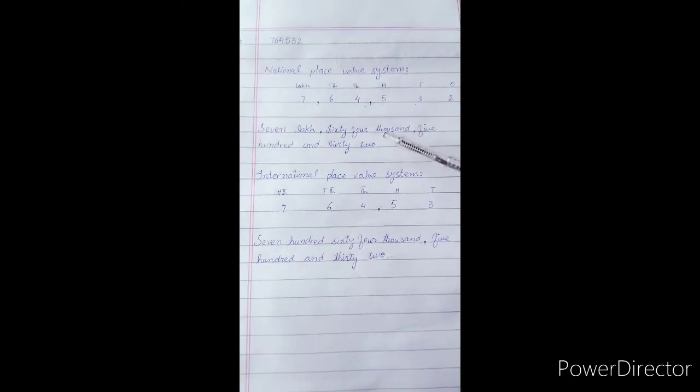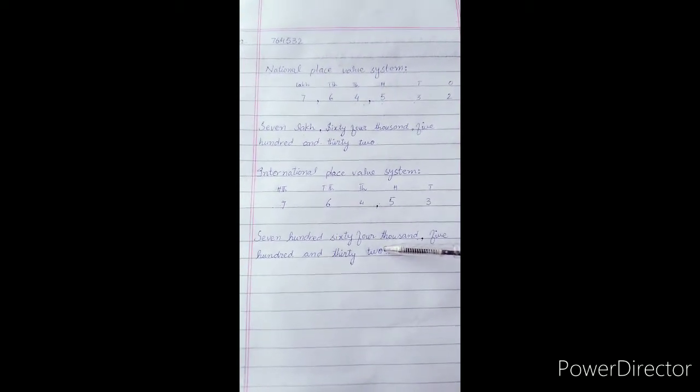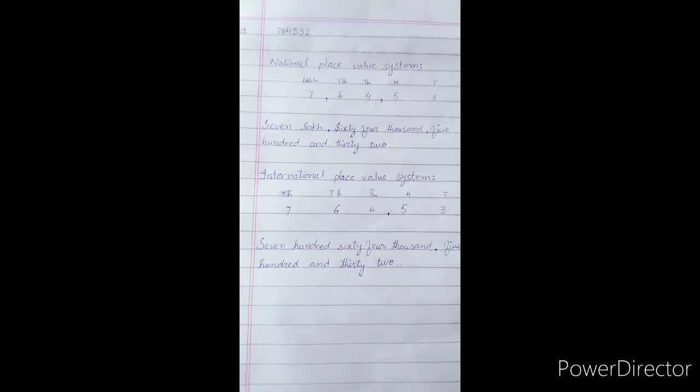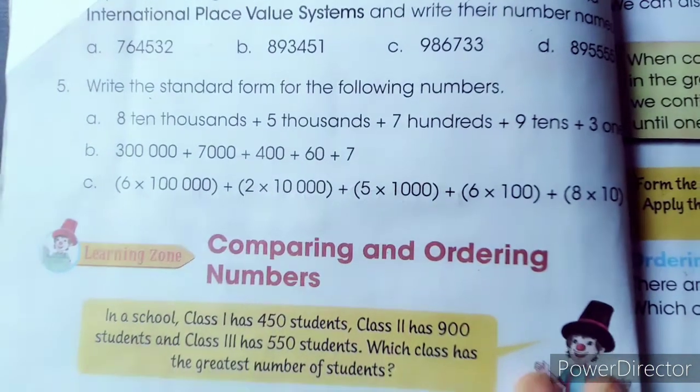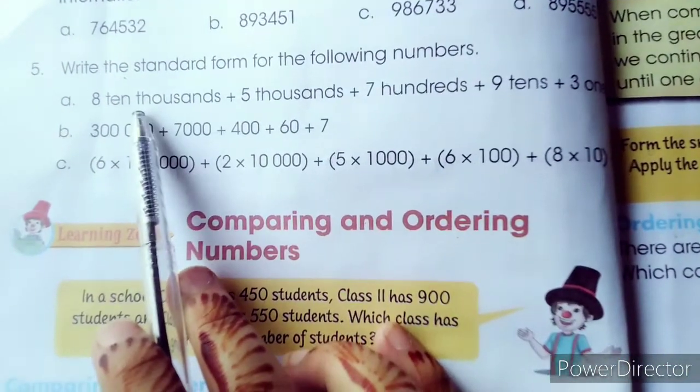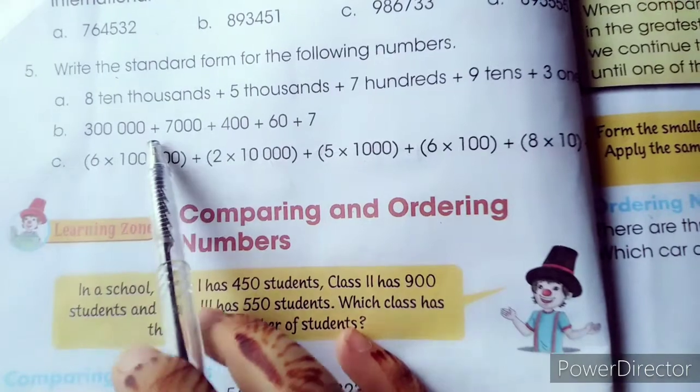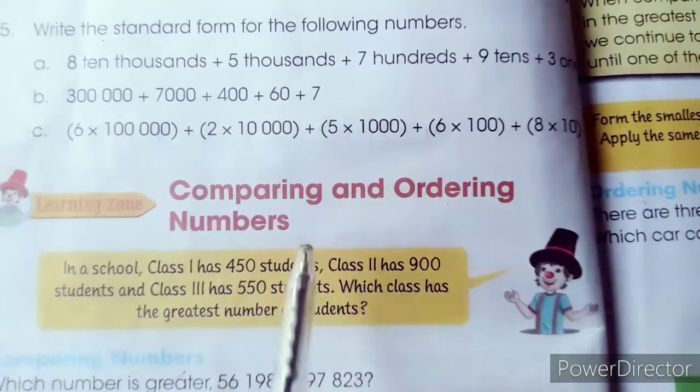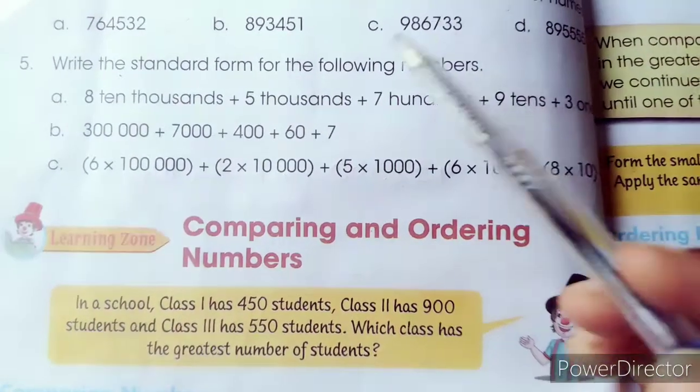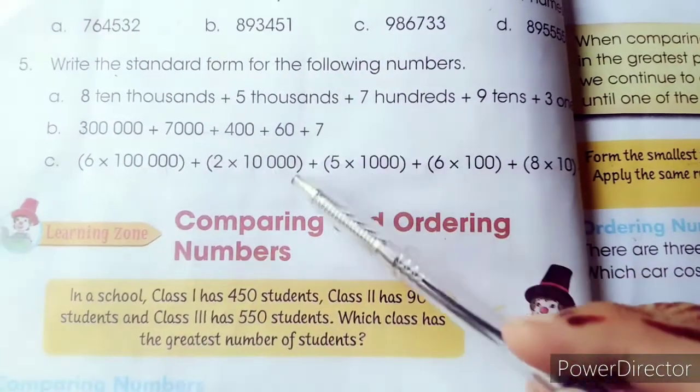Okay students, question number 4 part A is completely solved. According to this pattern you solve the remaining parts. First national place value system, then its number name, then international place value. Now we will solve the next question. Write the standard form for the following numbers. Three parts given. First part: places given, part B: numbers given, part C: multiplication then add. First question: 8 ten thousands, 5 thousands, 7 hundreds, 9 tens, and 3 ones.